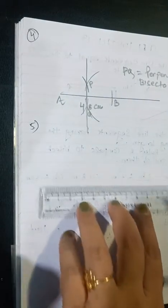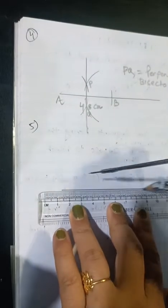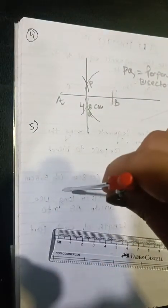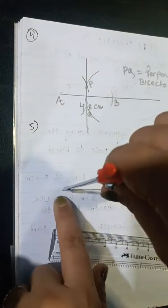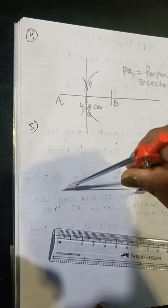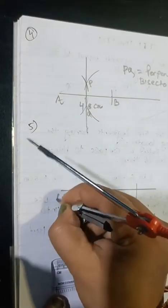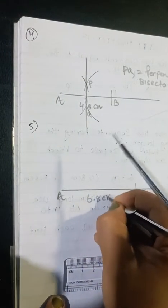Now place the ruler on the paper and draw the line. Place the pointer and take an arc. Label this line AB having length 6.8 cm. This is 6.8 cm.